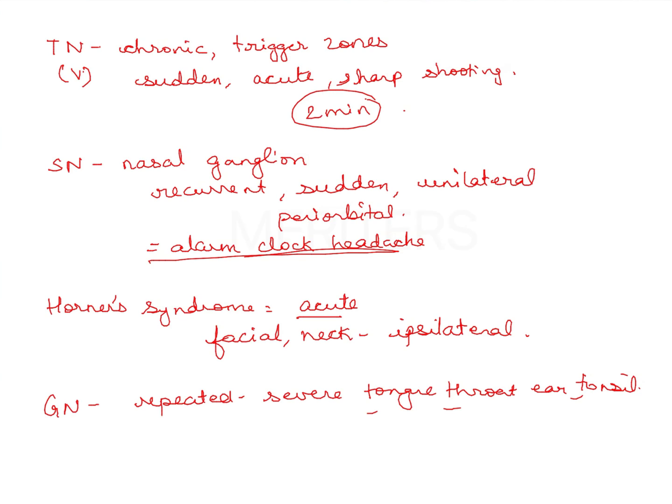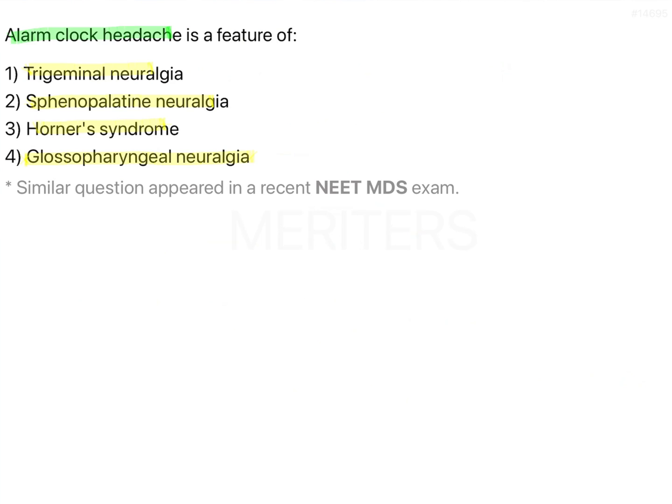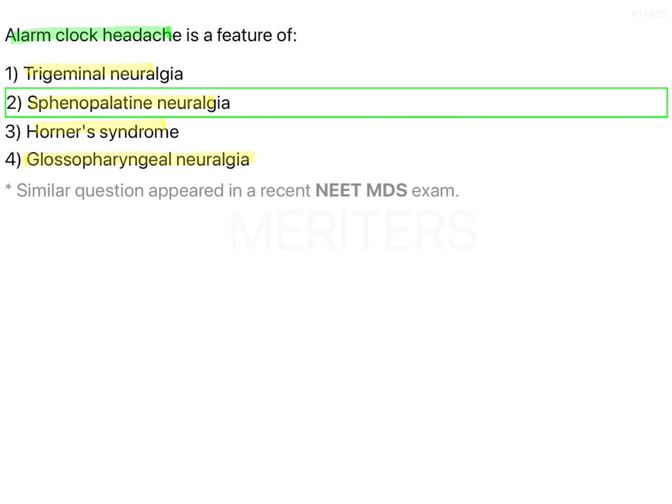The answer is sphenopalatine neuralgia. Something more about sphenopalatine neuralgia: it is also known as cluster headache or Horton syndrome. A classical feature of this is unilateral periorbital pain. There is an absence of trigger zone and the alarm clock headache. So option two is the correct answer.